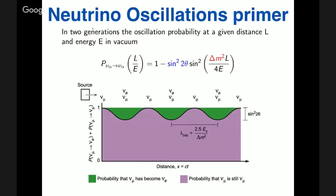Let's start with neutrino oscillations. In two generations, they follow a very simple prescription. The survival probability of a neutrino of flavor alpha that remains that flavor after traveling distance L and energy E is given by a formula controlled by two parameters: sine-squared 2-theta, which gauges the amplitude of the oscillation, and delta-m-squared, which controls the frequency of the oscillation.